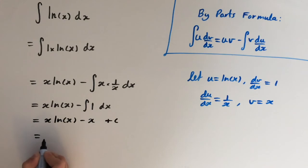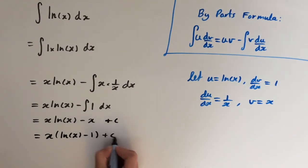So last step I'm just going to factor out x. So we get x times (ln(x) minus 1) plus c.